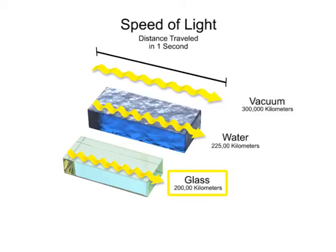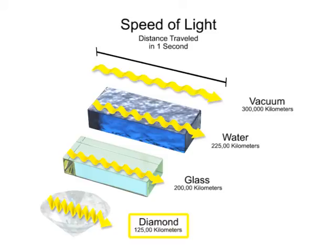Light travels very slowly through a diamond at about 41% of the speed of light, or 125,000 km per second, which is less than half the speed of light in a vacuum.